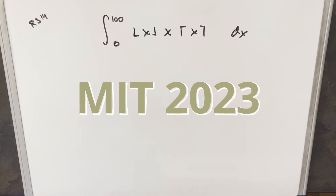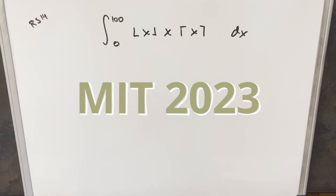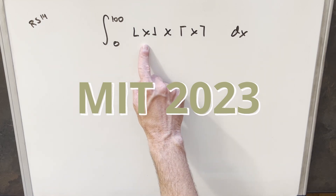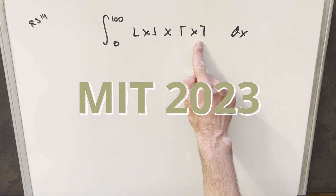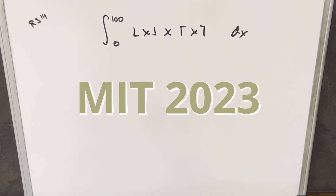We have here today another integral from the MIT Integration Bee 2023, regular season, problem 14. We have the integral from 0 to 100 of the floor of x times x times the ceiling of x, dx.